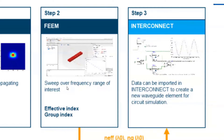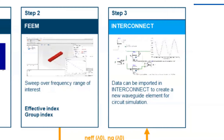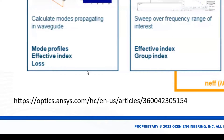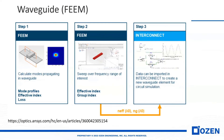In the next step, we will plot the effective index versus wavelengths. In the final step, we will import the results to Lumerical Interconnect, create a circuit based on this waveguide, and show the results. For the waveguide tutorial, you can follow this link to learn how to design a waveguide.